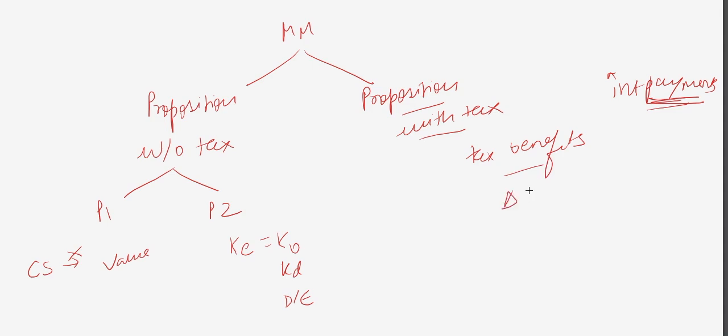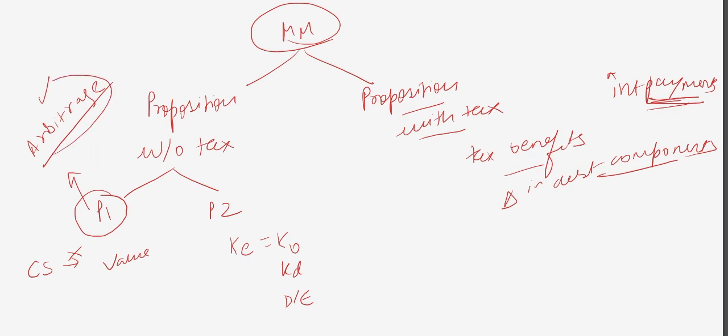It basically implies that the cost of debt reduces by the interest tax shields. Therefore, a change in the debt component affects the value of the firm. In proposition one, there is a famous thing that MM introduced called the arbitrage process. Through this approach, he proves that the value of the levered firm and the value of unlevered firm are the same. Therefore, he proves that there is no effect of the capital structure on the value of the firm.